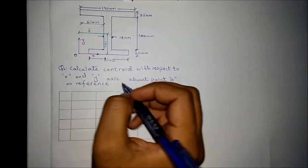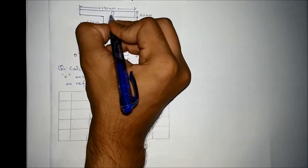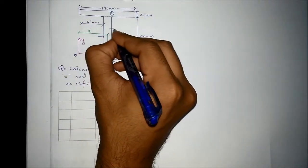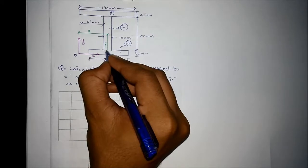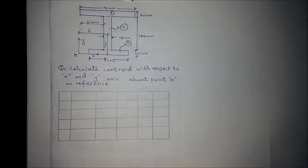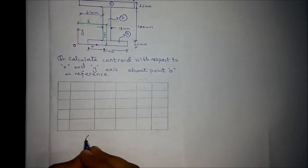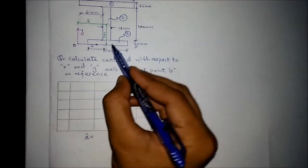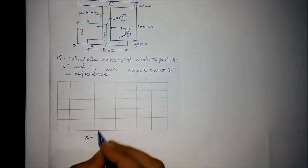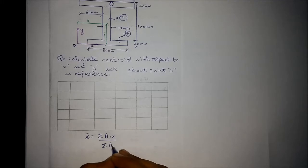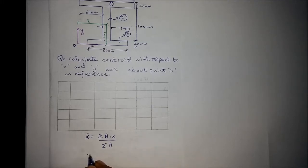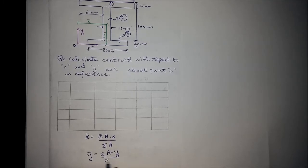For simplicity we break the shapes into smaller shapes: shape number 1 (rectangle 1), rectangle number 2, and rectangle number 3. The formula for centroid along the x axis is the summation of area multiplied by the lever arm of individual shapes from the x axis, divided by the summation of area. For centroid along the y axis it is the summation of area times y, divided by the summation of area.